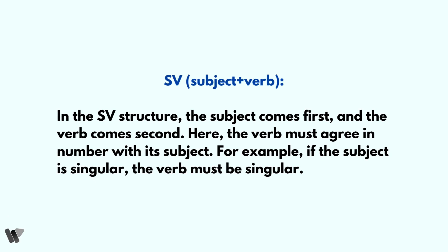The SV structure simply means subject-verb structure, that is subject plus verb. In the SV structure the subject comes first and the verb comes second. The verb must agree in number with the subject — for example, if the subject is singular, the verb must be singular. Let's go to the examples to understand it further.